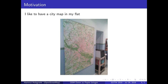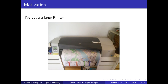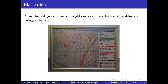Whenever I moved into a new home in recent years, one of the first things I always did was to get a city plan and just have it on a wall in my new flat to find my way around in the new neighborhood. A few years ago I got this large printer that you may have seen at the OSGEO booth, and I decided to use it to create my own neighborhood map.